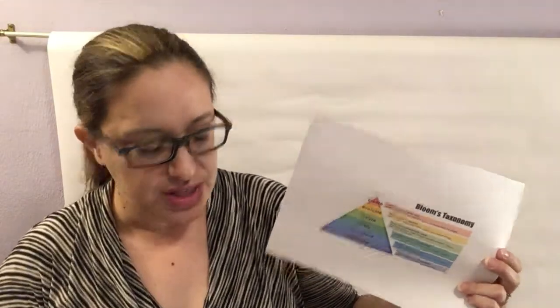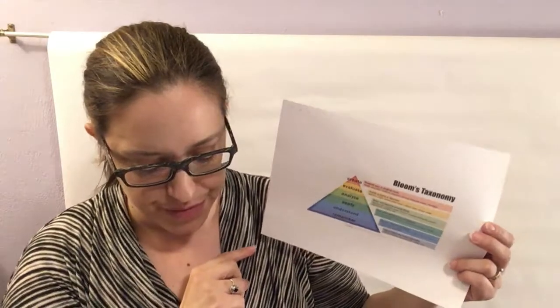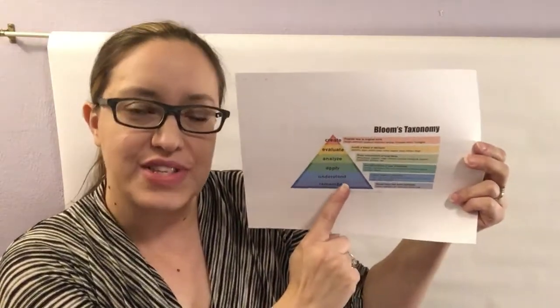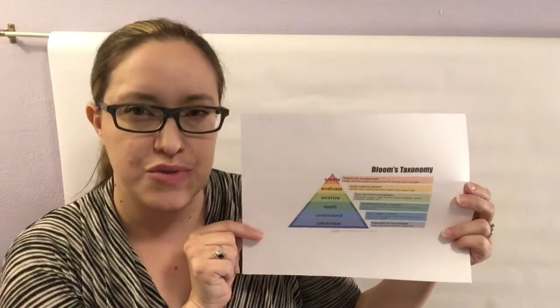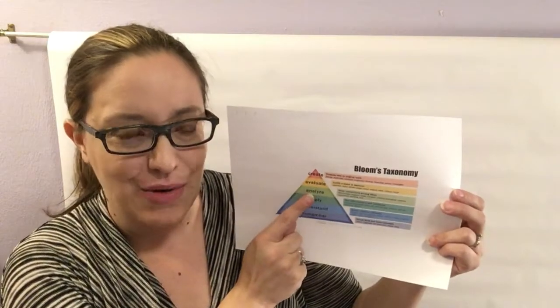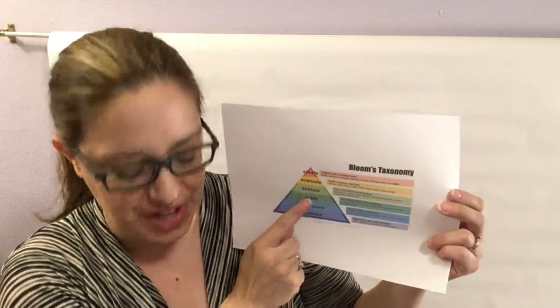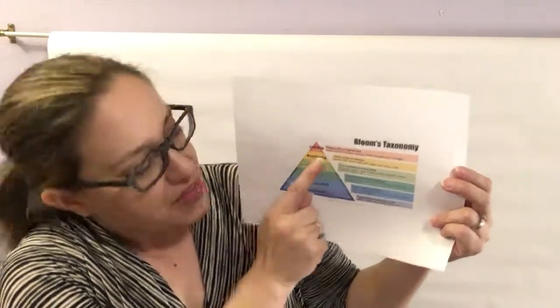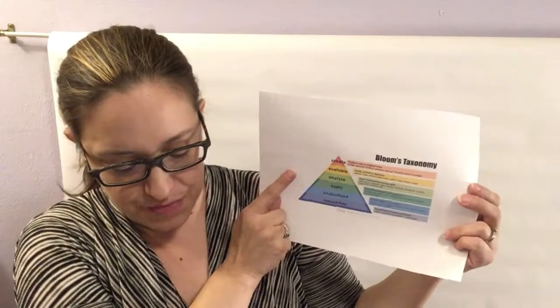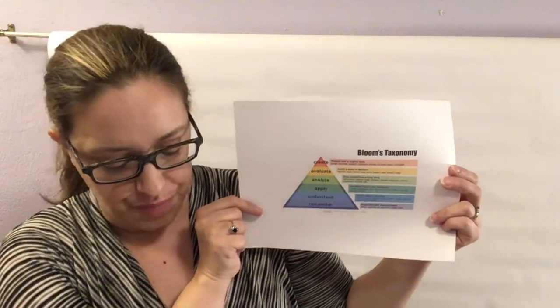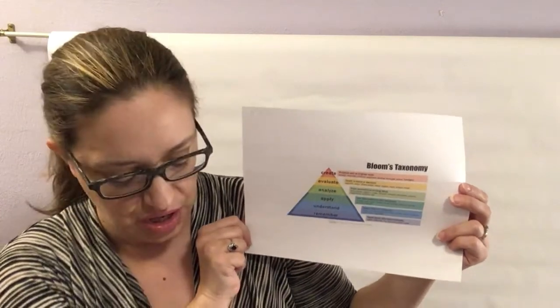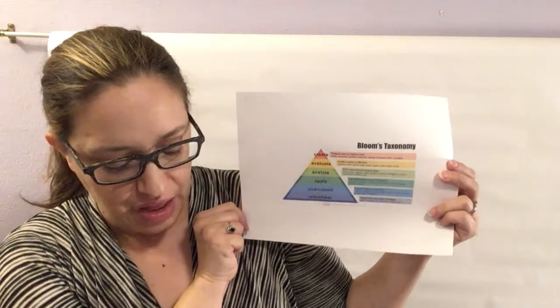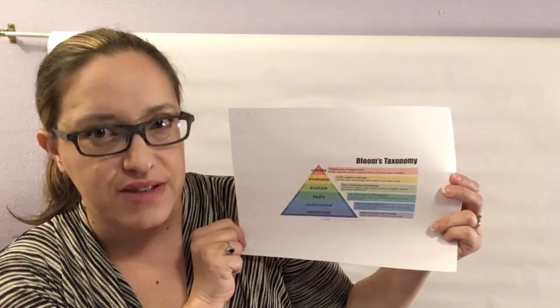The third learning outcome, discuss the benefits of ASMR, is at the understand level. A short paper might be a good way to assess this. The fourth learning outcome, evaluate an ASMR video, is at the analyze and evaluate levels. Assessing this outcome would require an assignment in which students would need to watch an ASMR video and write an analysis based on defined criteria.